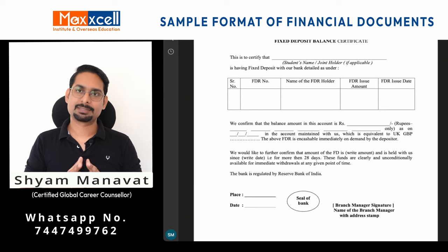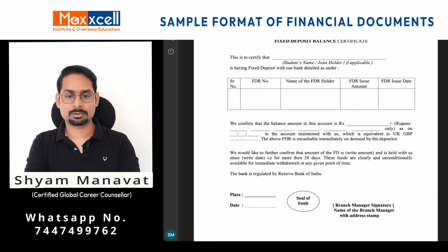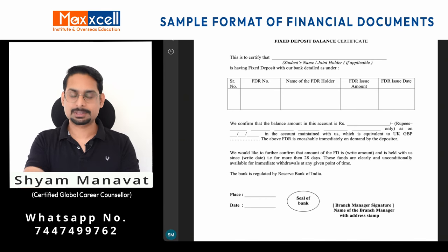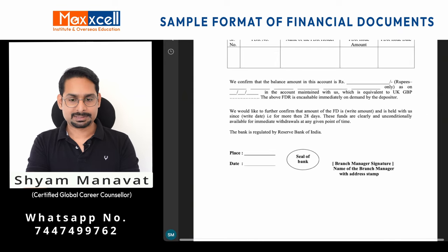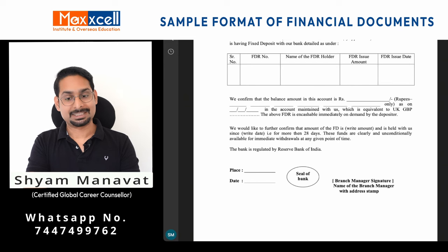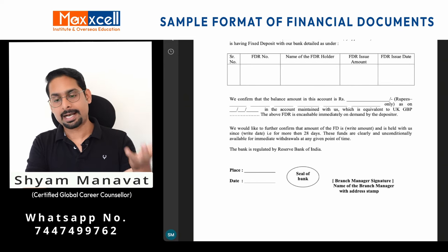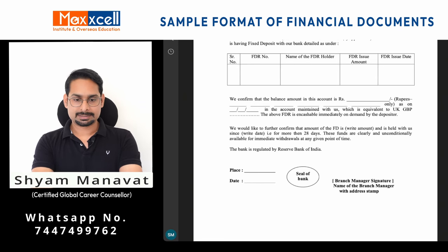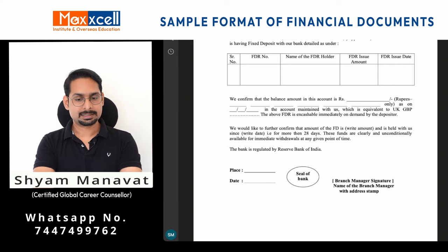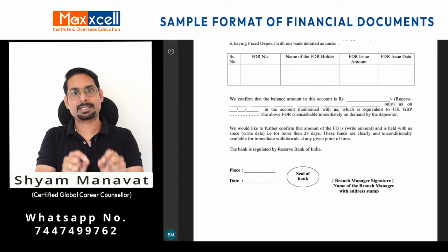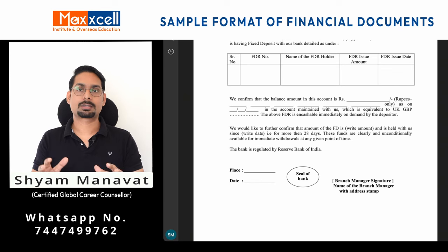For fixed deposit, you need the fixed deposit receipt along with a fixed deposit balance certificate. Show this format to the bank and request the certificate accordingly. The certificate should include the fixed deposit number, name of the holder, issuing amount, and issuing date — meaning the principal amount and when the FD was booked. The key paragraph states: the fixed deposit of the specified amount, held since a specified date which is more than 28 days old, and that funds are clearly and unconditionally available for immediate withdrawal at any given point of time — meaning even before the maturity date.